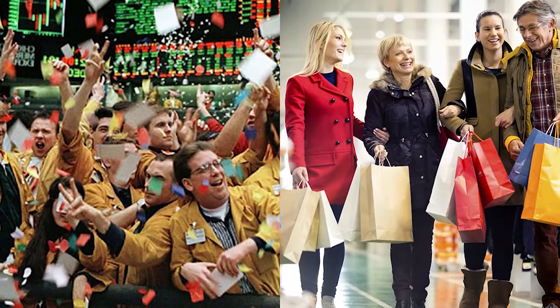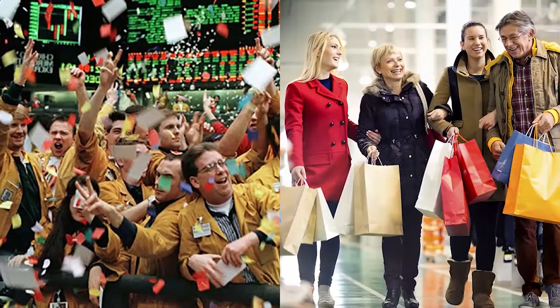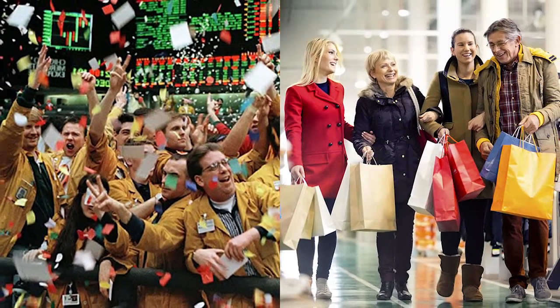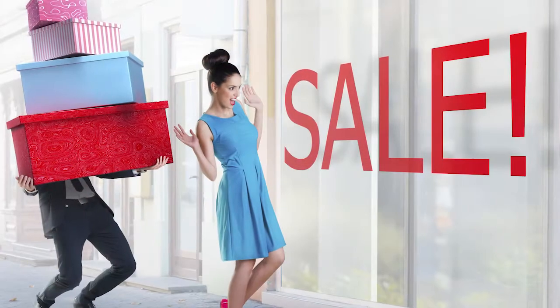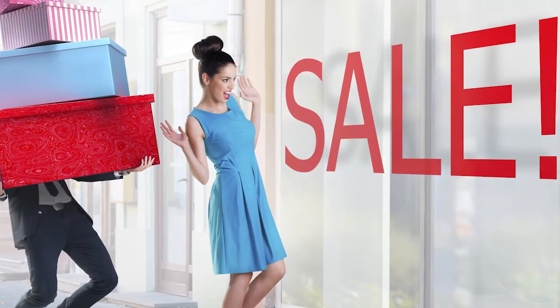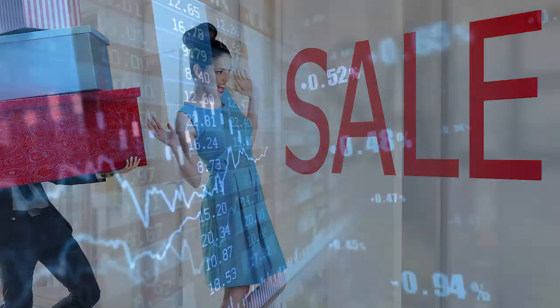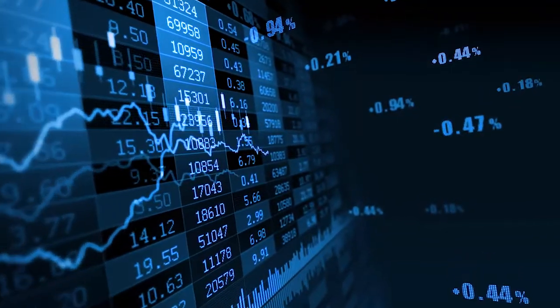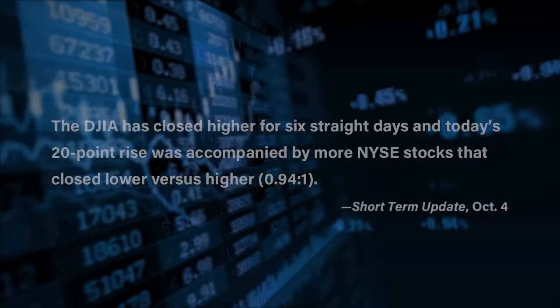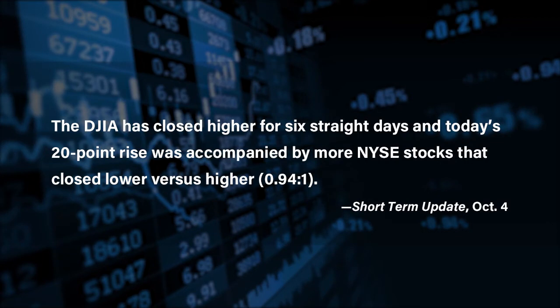Does that fifth wave description align with what's going on today? Take a look at this October 4th CNBC headline: 'American optimism about the economy hits an all-time high in new CNBC survey.' That certainly fits the part about optimism running extremely high. As for market breadth, our October 4th short-term update noted that the Dow Jones Industrial Average closed higher for six straight days, yet today's 20-point rise was accompanied by more NYSE stocks closing lower versus higher.